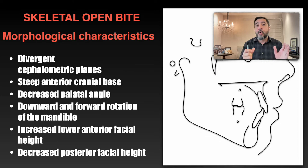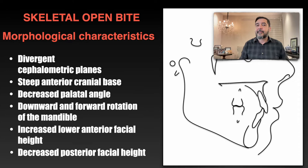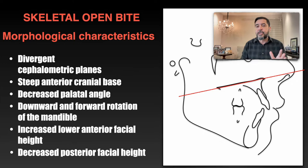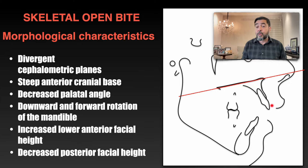In this case, skeletal open bite has some characteristics that show us that this case may not be well treated using compensatory treatment — neither using extrusion of anterior teeth nor using intrusion of posterior teeth. These characteristics of skeletal anterior open bite may not make it possible to do this kind of compensatory treatment, because if we do the extrusion, what should happen? I will show more incisor during smile or at least in a rest lip position, which is not good — a very bad outcome.